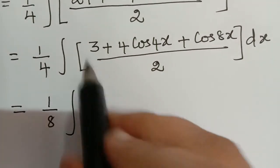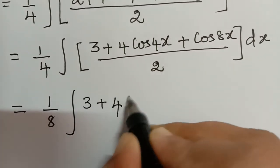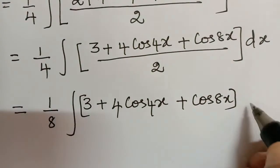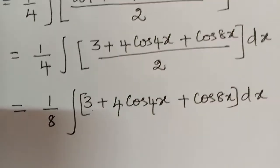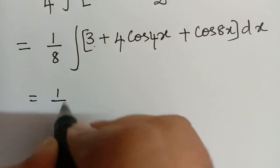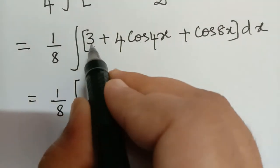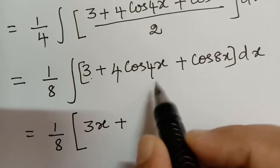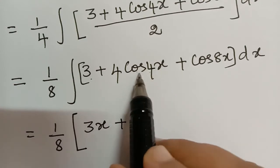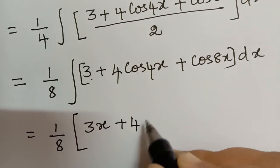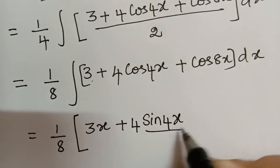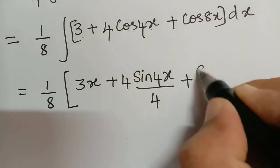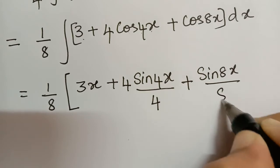We can now integrate each term separately. Integrating 3 gives 3x. The integral of cos4x is sin4x/4, so 4·sin4x/4 gives sin4x. The integral of cos8x is sin8x/8. So we have (1/8) times [3x + sin4x + sin8x/8].